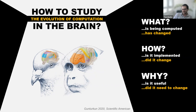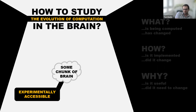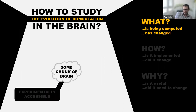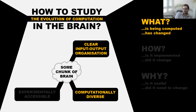What I'm going to argue is that the retina is a wonderful place to look at for these questions. If we want to study computation in the brain, we need a chunk of brain with certain necessary parameters: it has to be experimentally accessible, it needs a clear input-output organization so we can describe a computation comprehensively, and it also needs to be computationally diverse — because if it's not diverse, there's not much to study.